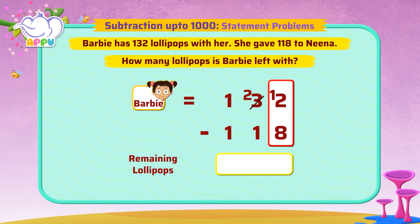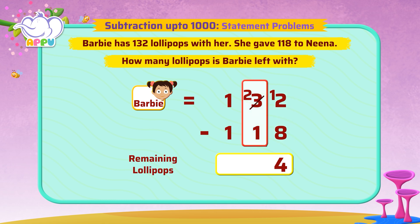Now we can easily subtract 8 from 12, which is 4 in the ones place. Since we borrowed the 1 from 3, the 3 has become 2. So when we subtract 1 from 2, we get 1 in the tens place.